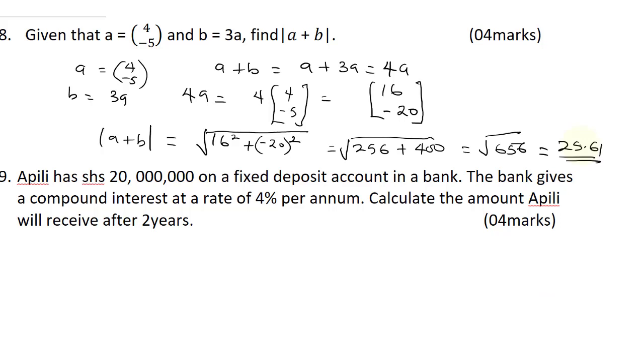Question 9 is, Apelli has 20 million shillings on a fixed deposit account in a bank. The bank gives a compound interest at a rate of 4% per annum. Calculate the amount Apelli will receive after two years. One of the easiest ways to solve compound interest is to apply the formula A equal to P into 1 plus R over 100 raised to the power N. Where P is your principal, and R is your rates, and N is your time.